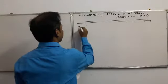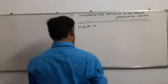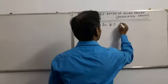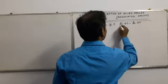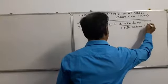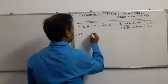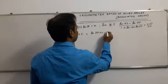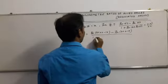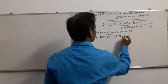Second sum: if tan 17° = x, prove that (tan 163° - tan 107°) / (1 + tan 163° · tan 107°) = (1 - x²) / 2x. LHS equals tan 163°, which can be written as tan(180° - 17°), and tan 107° can be written as tan(90° + 17°), divided by 1 plus tan(180° - 17°) · tan(90° + 17°).